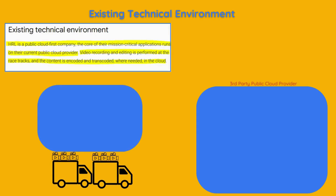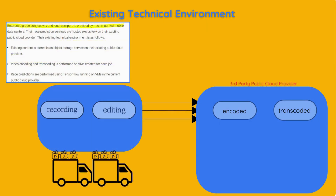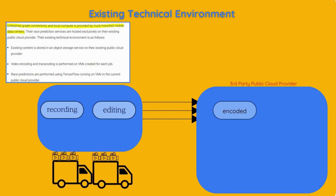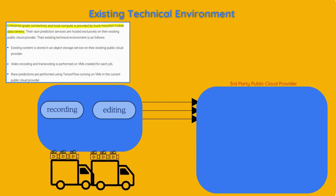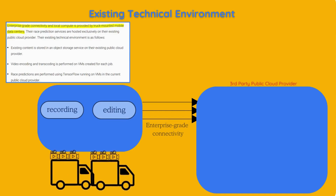When races happen, videos are recorded and edited directly at the racetracks using specialised equipment. Once the videos are ready, they are sent to the cloud to be encoded — converted into a digital format — and transcoded, converted into different formats to be compatible with various devices. At the racetracks, they use truck-mounted mobile data centres: portable, powerful computers and networking equipment set up in trucks, providing high-speed internet and computing power locally, ensuring everything runs smoothly during events.